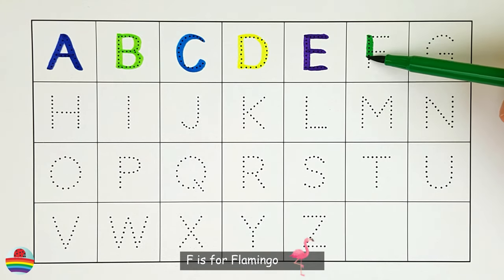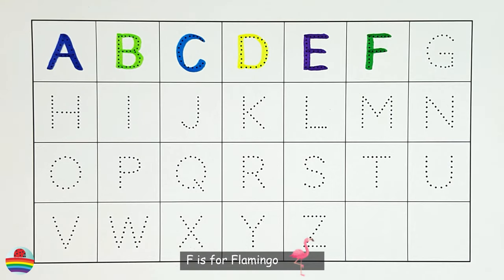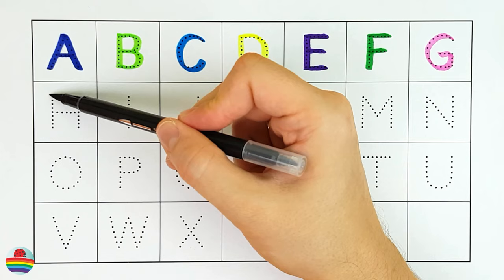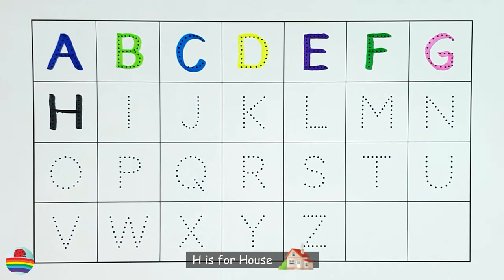F. F is for flamingo. F. G. G is for grape. G. H. H is for house. H.